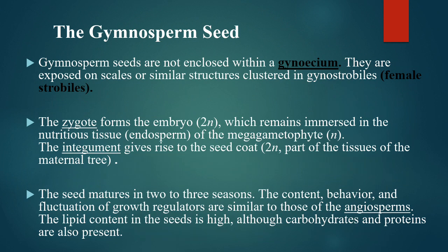The gymnosperm seed: gymnosperm seeds are not enclosed within a fruit; they are exposed on scales or similar structures clustered in female strobili. The zygote forms the embryo, which remains immersed in the nutritional tissues of the megagametophyte. The integument gives rise to the seed coat.